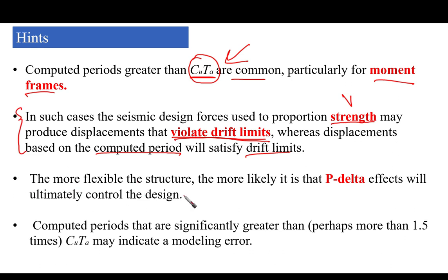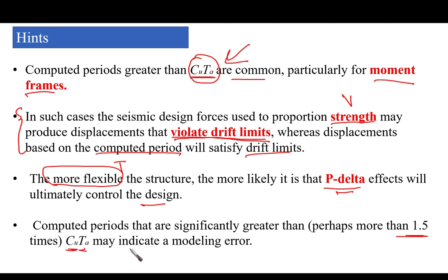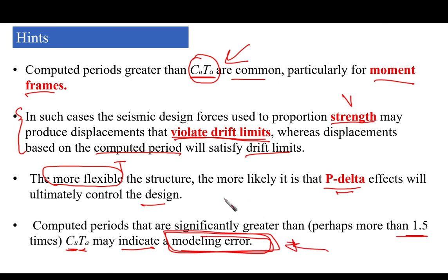Computed periods greater than Cu·TA are common, particularly for moment frames. In such cases, the capped seismic design force used for strength proportioning may produce displacements that violate drift limits. Therefore, the computed period should be used to satisfy drift limits. If the computed period is significantly greater than 1.5 times Cu·TA, this may indicate a modeling error and should be investigated.